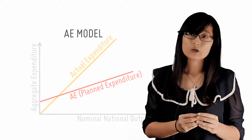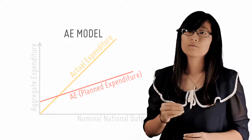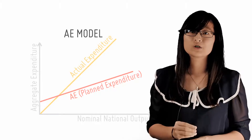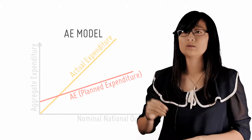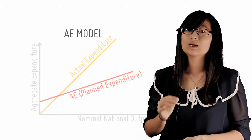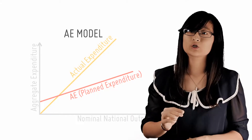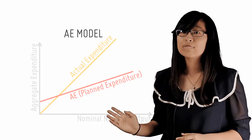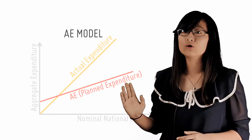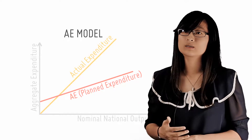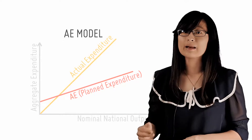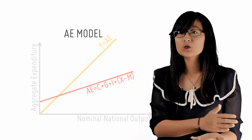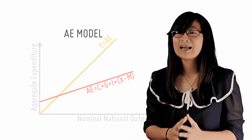This line must represent actual expenditure — the real amount of money spent. Recall that in Section 1.3, we established that national income equals national expenditure. Hence, the line that represents actual expenditure is an upward-sloping line that cuts the graph at zero and forms a 45-degree angle with the x- or y-axis. At any point along this line, the corresponding x- and y-values — in other words, the expenditure and output — are exactly equal.